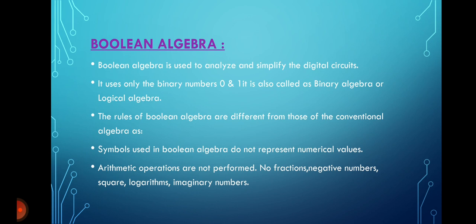The rules of Boolean algebra are different from those of conventional algebra. First, symbols used in Boolean algebra do not represent numerical values. Second, arithmetic operations such as addition, subtraction, and division are not performed here — there are no fractions, negative numbers, square roots, logarithms, or imaginary numbers. Third and most importantly, Boolean algebra allows only two values — 0 and 1 — for any variable.